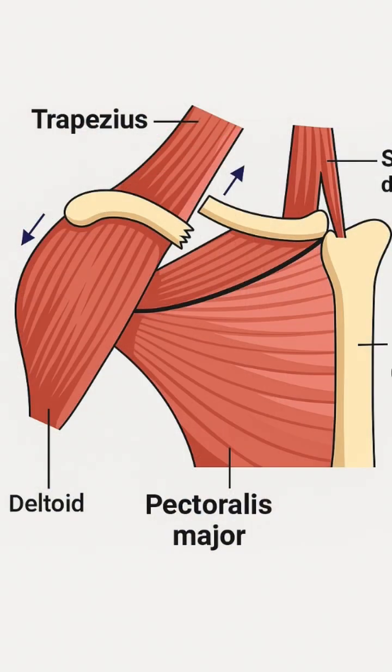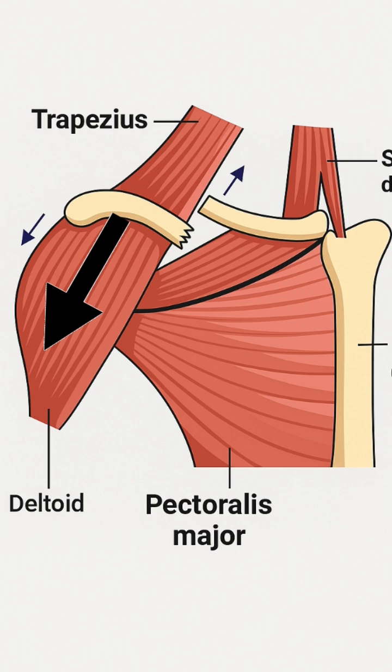After the fracture, the medial segment is pulled upward by the sternocleidomastoid, and the lateral segment is displaced downward due to gravity and the weight of the upper limb.